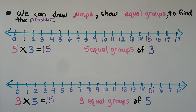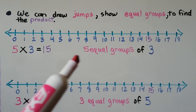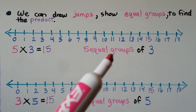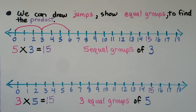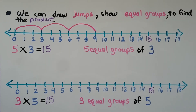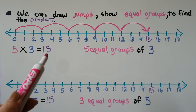We can draw jumps to show equal groups and find the product. The multiplication number sentence says five times three is equal to fifteen. That means we need five equal groups of three, so we're going to need five jumps of three — one, two, three, four, and five jumps.